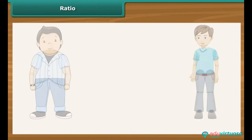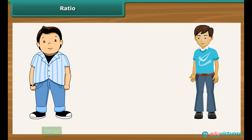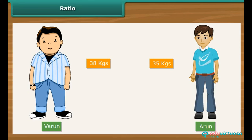Ratio. We usually compare quantities and values by calculating their difference. For example, suppose the weights of two friends, Varun and Arun, are 38 kg and 35 kg respectively. We say that Varun is heavier than Arun by 38 minus 35, i.e. 3 kg.